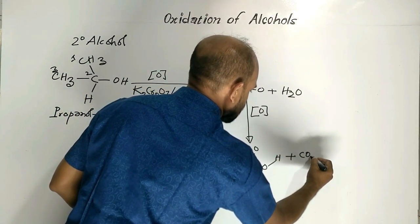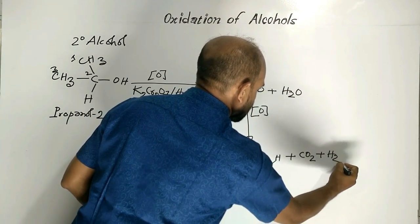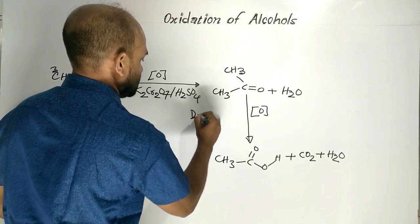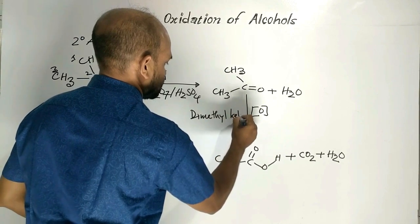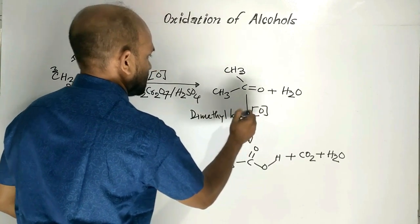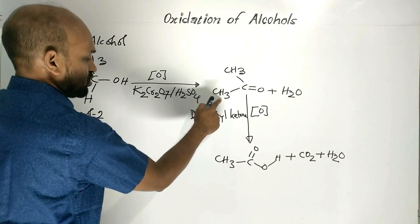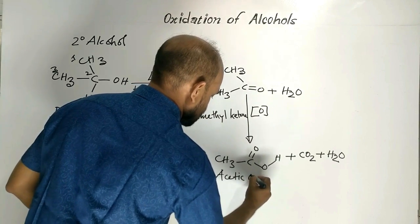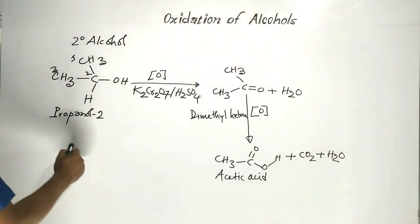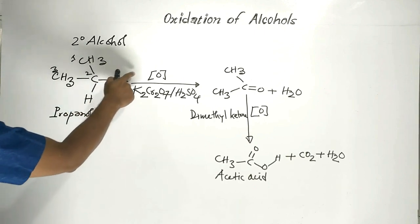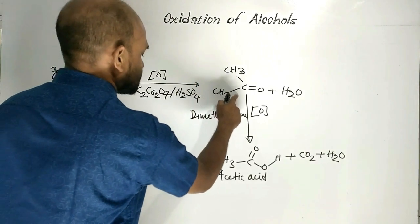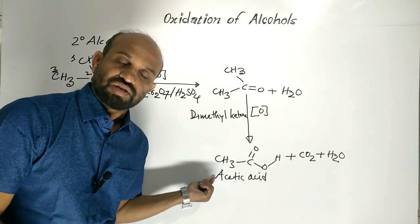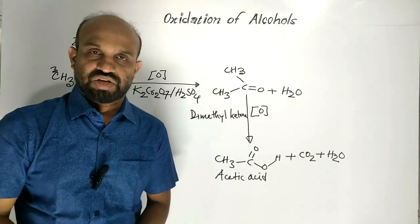By-products are carbon dioxide and water. This ketone is dimethyl ketone, also known as propanone. And this is acetic acid. So when 2 degree alcohol is oxidized, firstly propanone is obtained, and on further oxidation acetic acid is obtained.